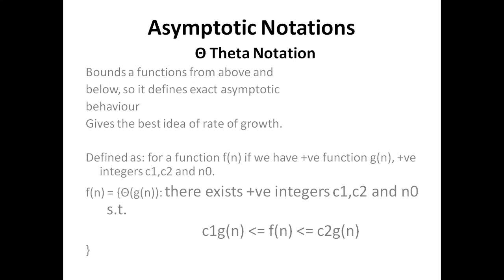Theta notation gives the best idea of the rate of growth. Given a function f(n) and another function g(n) with three positive constants c₁, c₂, and n₀, we write f(n) = Θ(g(n)) if there exist positive constants c₁, c₂, and n₀ such that c₁·g(n) ≤ f(n) ≤ c₂·g(n) for all n ≥ n₀.